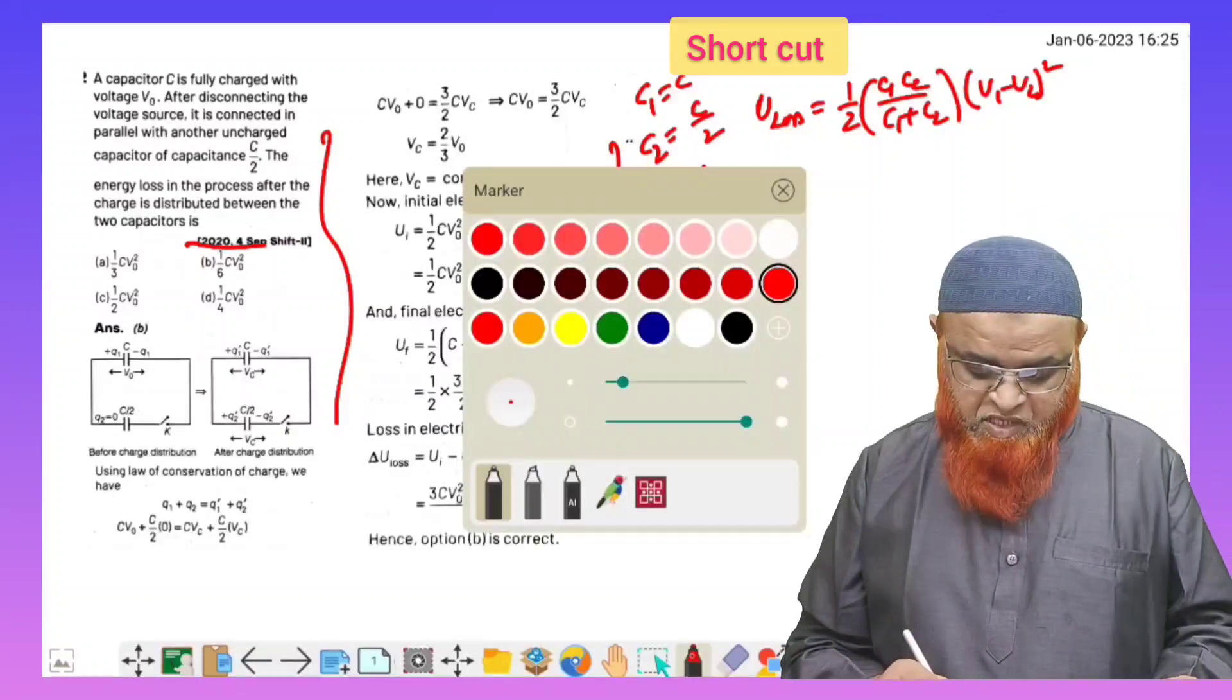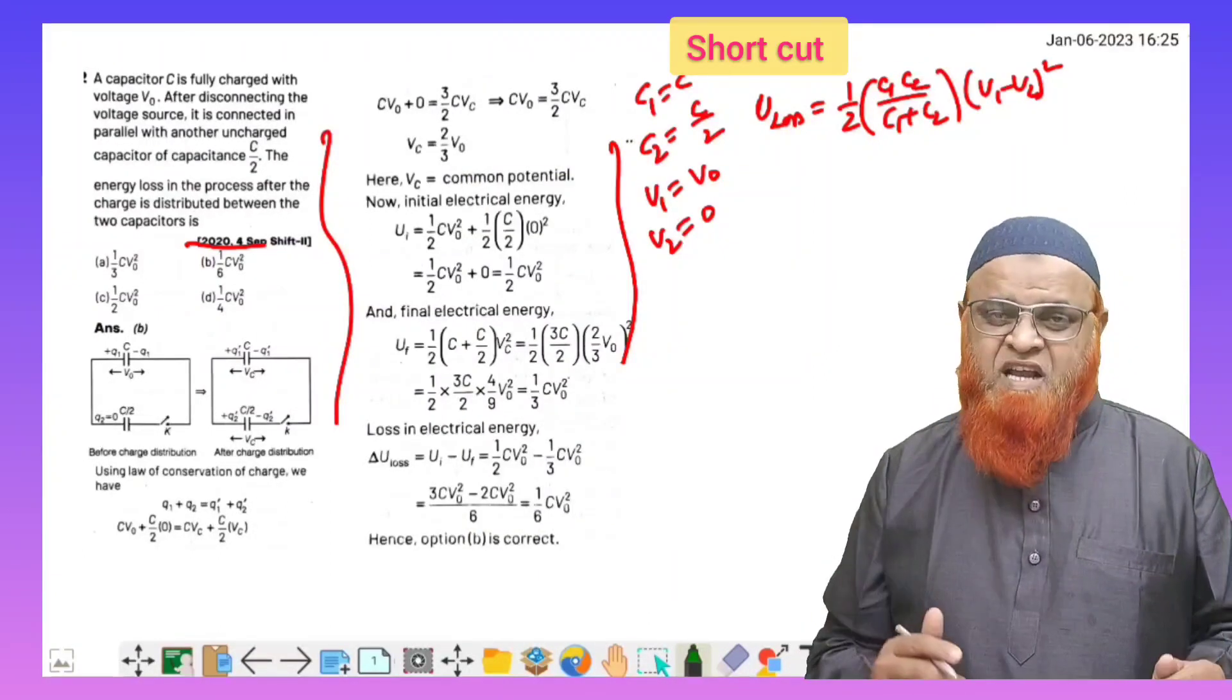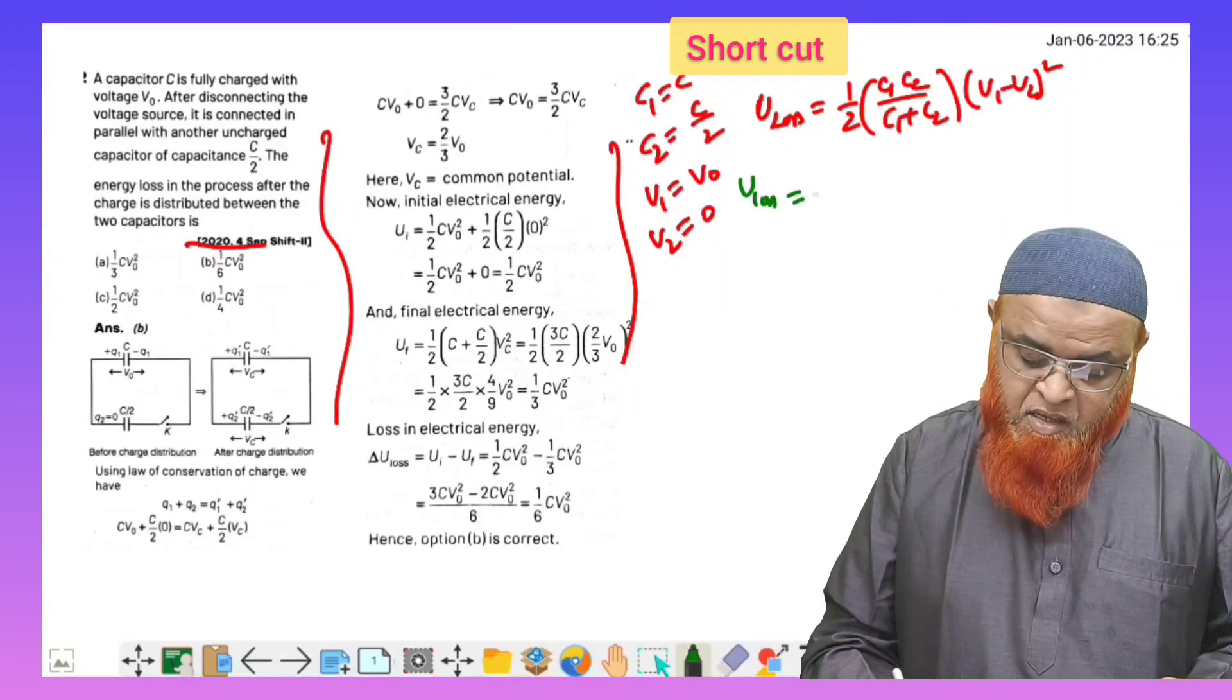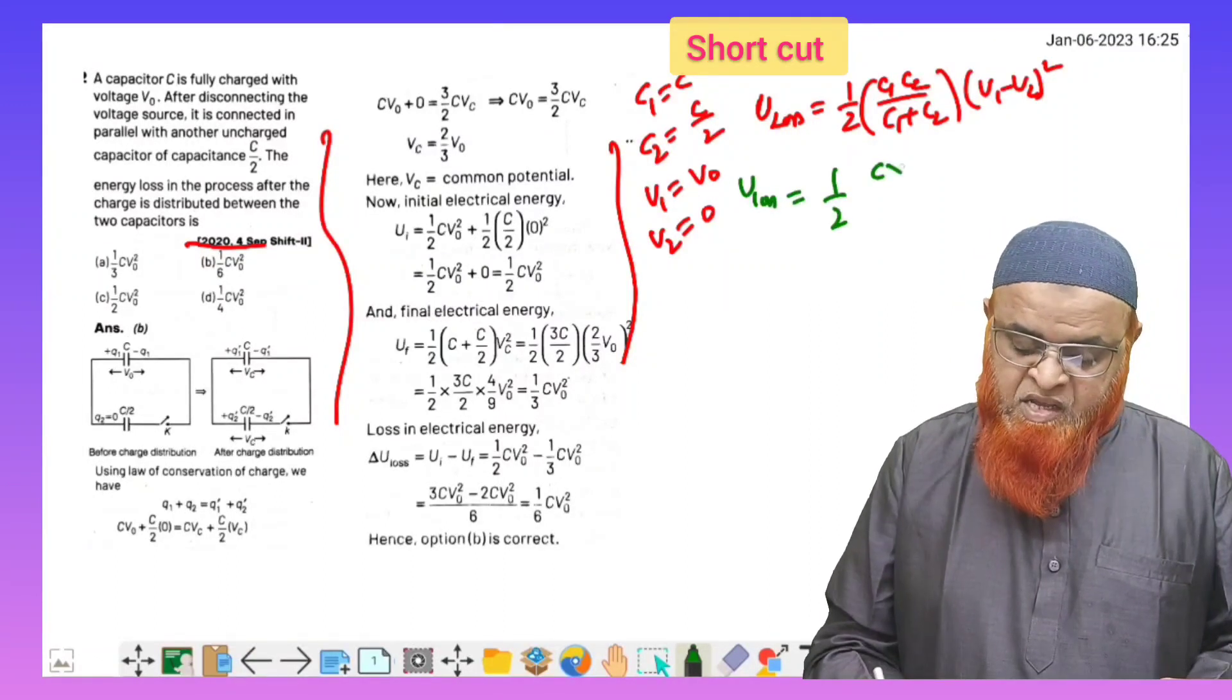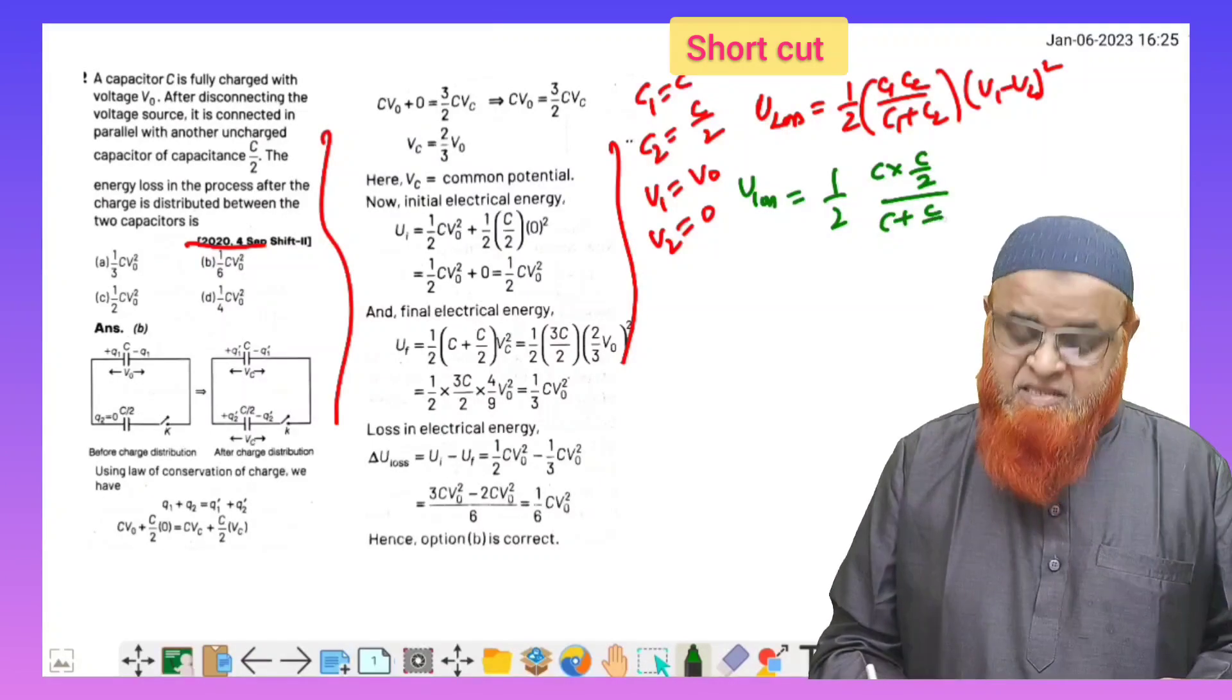What is the application here? Half C1 means C, and C2 is given as C/2, and C plus C/2 like this. V1 is taken as V0 minus 0 whole square, that's it.